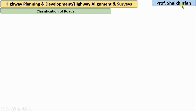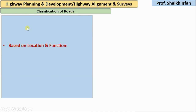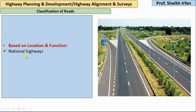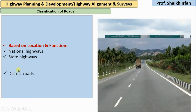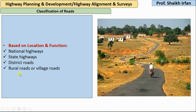Hello everyone, my name is Sheikir Phan and in this video we are going to see classification of roads based on location and function. Based on location and function, roads are classified as national highways, state highways, district roads, and rural roads or village roads. So let's see them one by one.